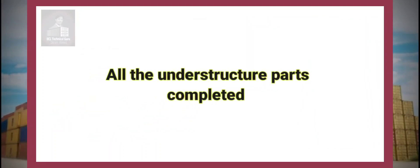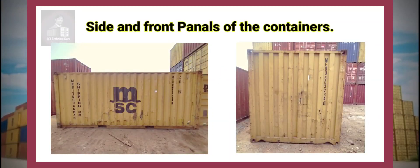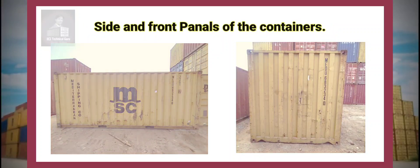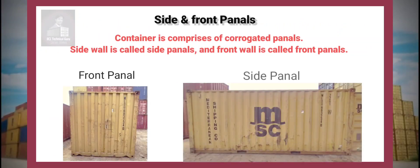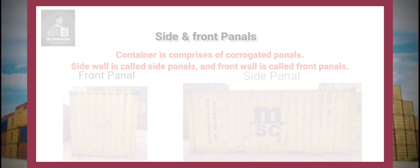All the understructure parts are now completed. Let's learn about the side and front panels of the containers. The container comprises corrugated panels — the side wall is called side panels, and the front wall is called front panels.